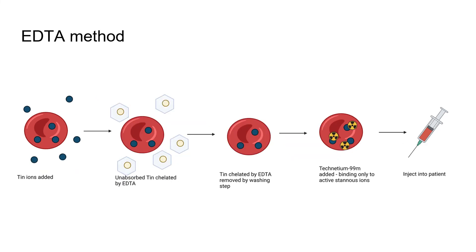The EDTA method, which I like myself a little bit more: the tin ions are added, the unabsorbed tin is caught up by the chelator called EDTA, it is washed off completely and then you add your radioactivity or pertechnetate and it only binds to the active tin ions inside the red blood cells.